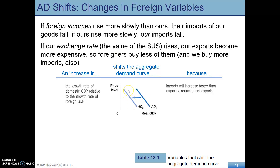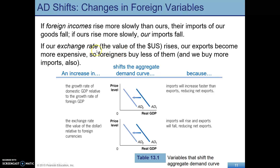In the other case, if foreigners become wealthier relative to us, that's going to stimulate our exports and lower our imports — an AD curve shift to the right. Be able to think through both scenarios. Similarly, with the exchange rate: a higher exchange rate means the dollar is worth more, so we're able to buy more foreign goods and they're able to buy less of ours.